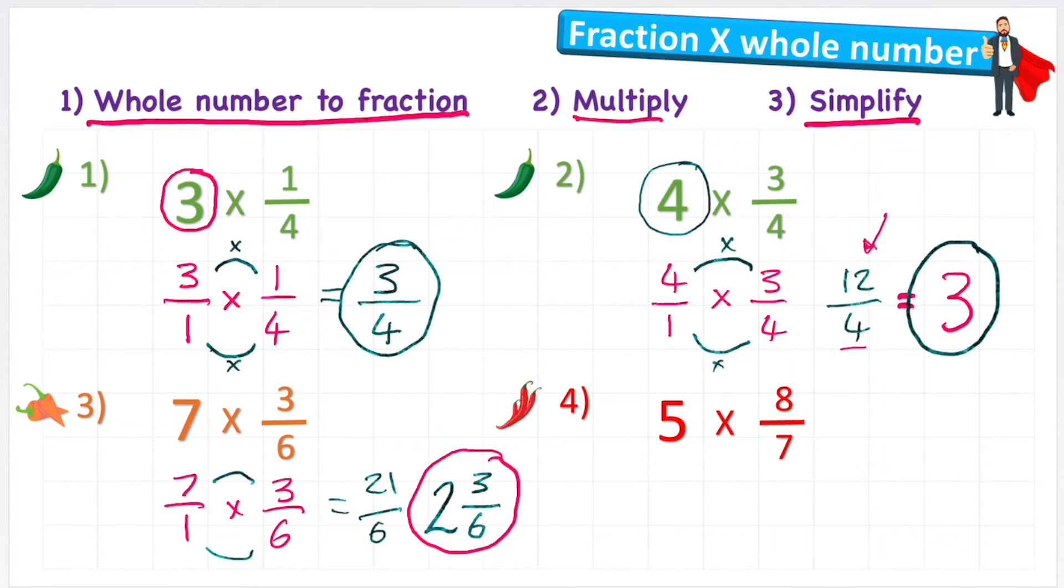Alright let's look at our last one. 5 times 8 sevenths. So 5 again can be represented by 5 over 1 times 8 sevenths. First job, multiply the numerators. 5 times 8 is 40. Then multiply the denominators. 1 times 7 is 7. So I'm left with another improper.